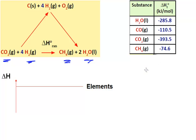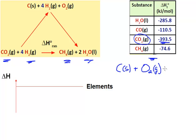The first thing I want to do is focus on the meaning of the delta H of formations. I'll pick CO2 as my example. That value of minus 393.5 kJ per mole means that from its constituent elements — in this case carbon solid plus oxygen gas — the formation of one mole of CO2 gas from elements in their standard state releases minus 393.5 kJ per mole of CO2 formed.